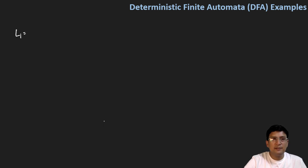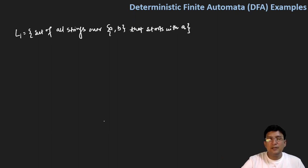So let's say the language is given as the set of all strings over A and B that starts with A. So the meaning of this is that we will have to select strings over the alphabet set A and B, where sigma is given as A and B.